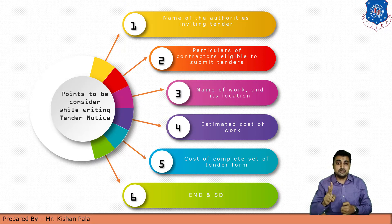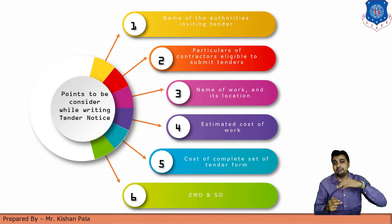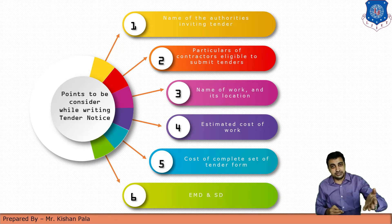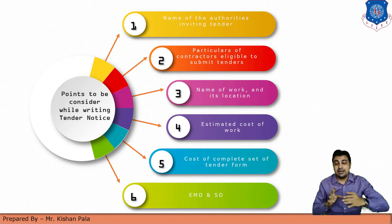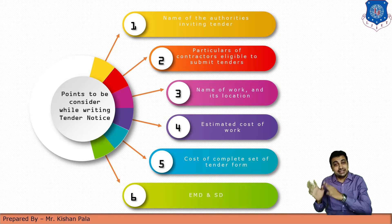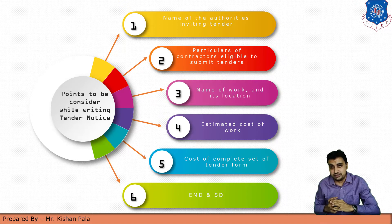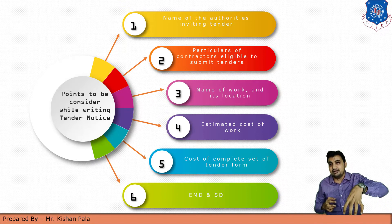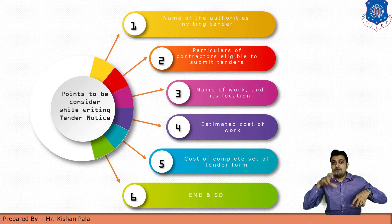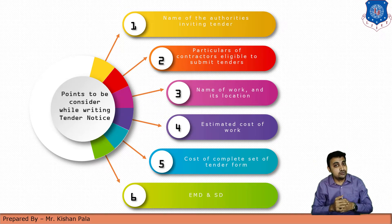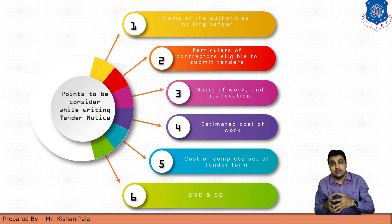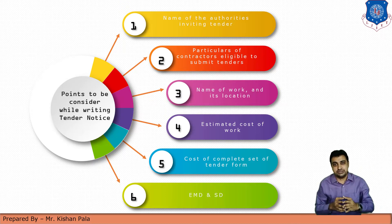The second point is the particulars of contractors eligible to submit tenders. For example, if you are offering a heavy structure like a bridge or heavy industrial work, we know that AA class or A class contractors can do that work. The eligibility of the contractor who can take part in the bidding process should be clearly mentioned.